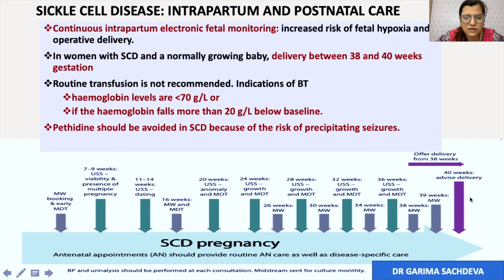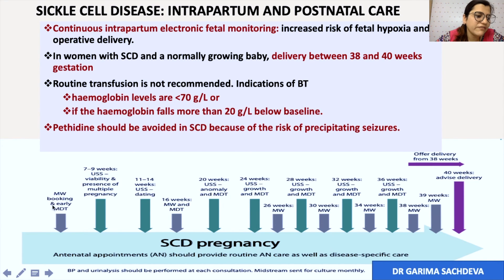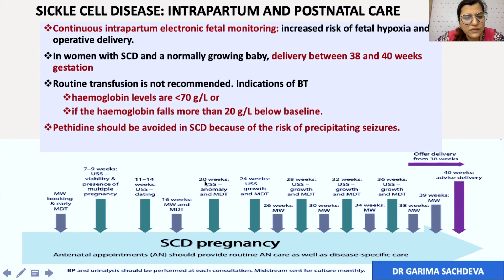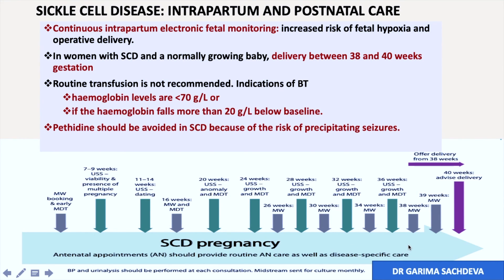This diagram demonstrates the antenatal visit schedule for patients with sickle cell disease, divided between midwife and MDT visits. Early booking should include visits with the midwife and MDT team. An ultrasound is done at 7 to 9 weeks. A dating scan is done at 11 to 14 weeks. At 16 weeks there is a visit by both midwife and MDT. At 20 weeks there is an anomaly scan and MDT visit. After 20 weeks, every four weeks there are visits with the MDT at 24, 28, 30, 34, and 38 weeks, with midwife visits in between. After 38 weeks, delivery is planned.